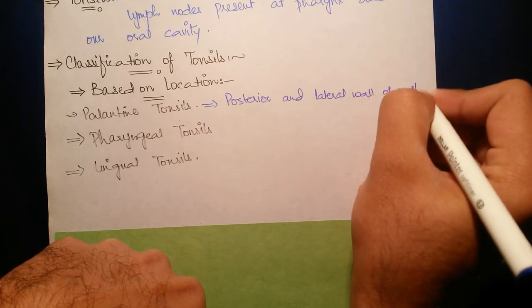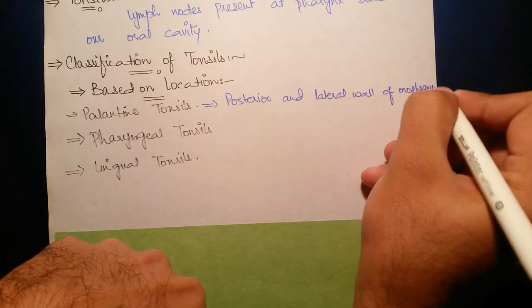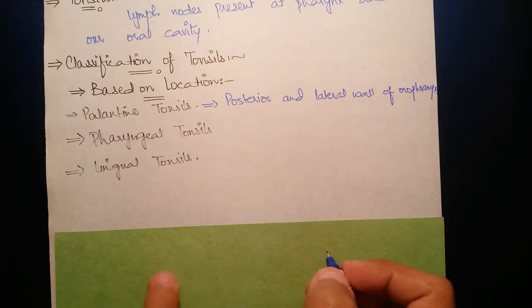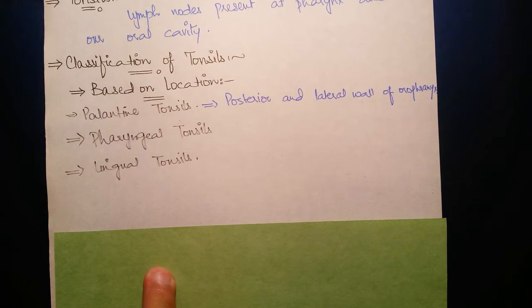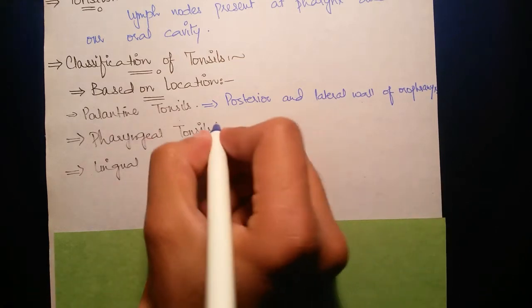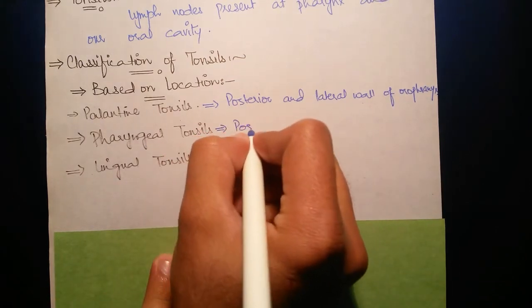The second is pharyngeal tonsils. The inflammation of these tonsils is known as pharyngeal tonsils. They are located at the posterior wall of nasopharynx.